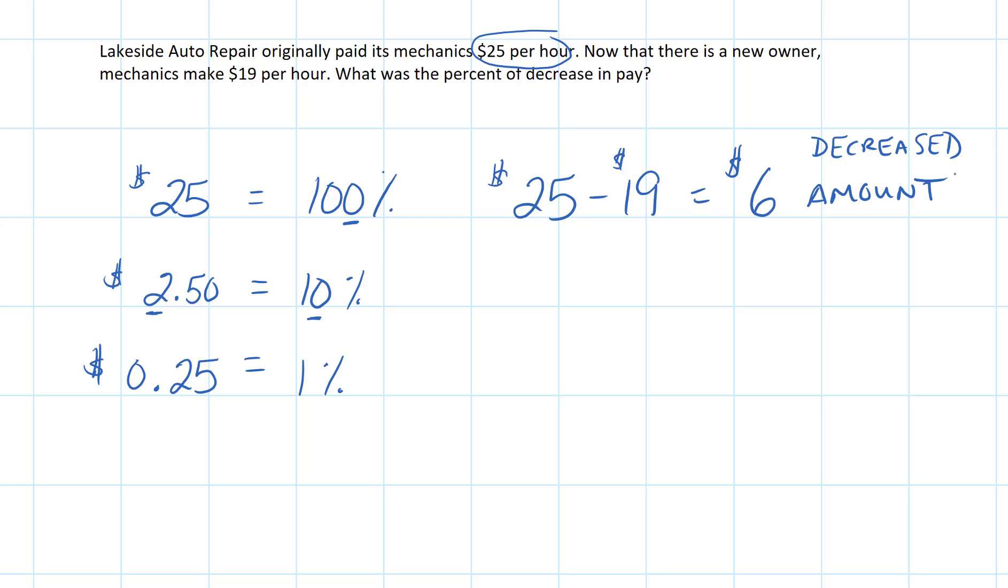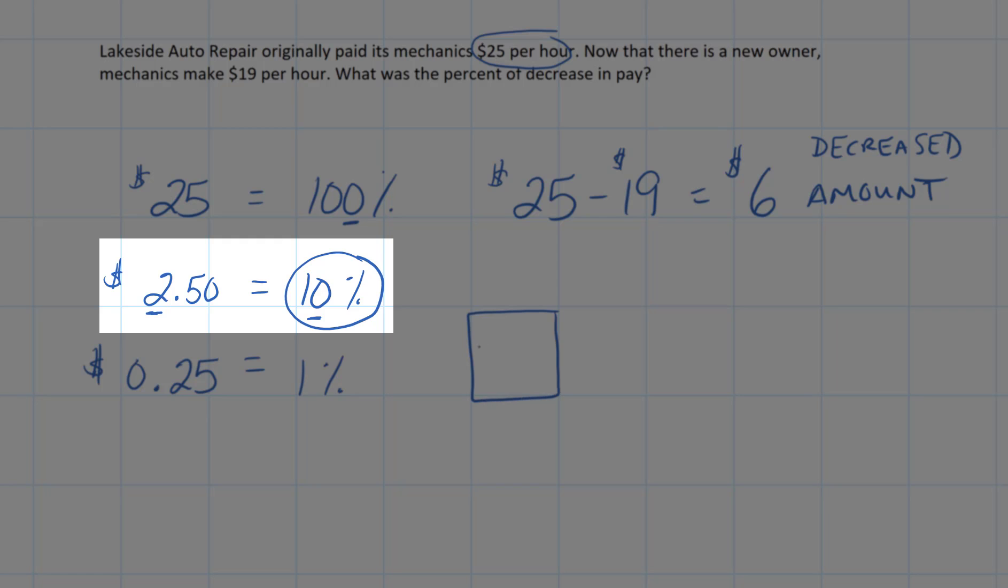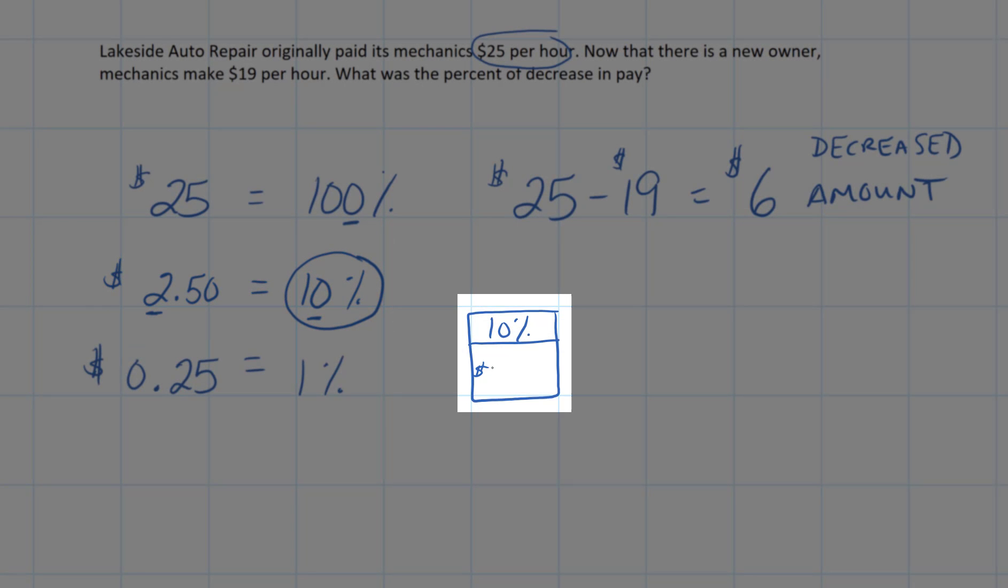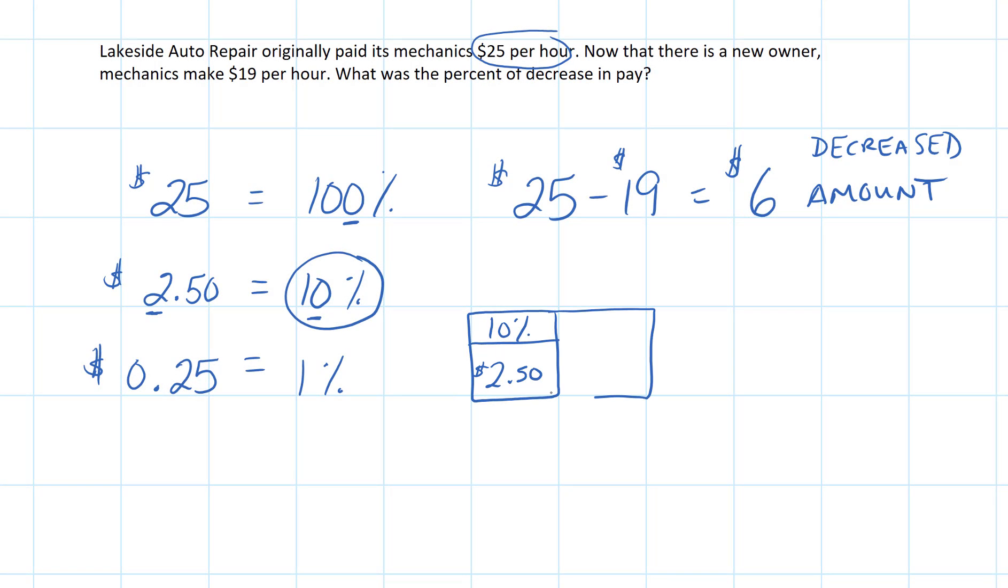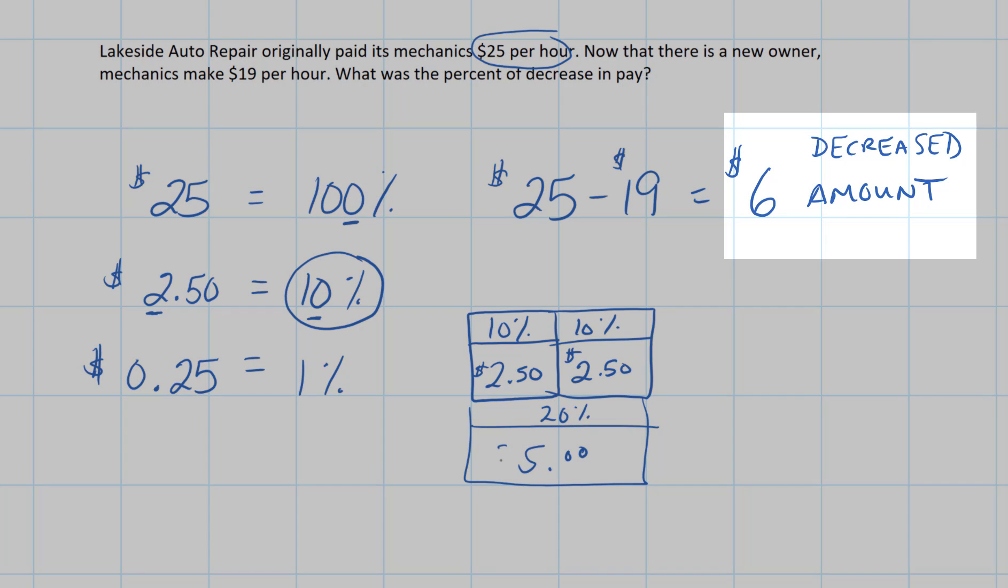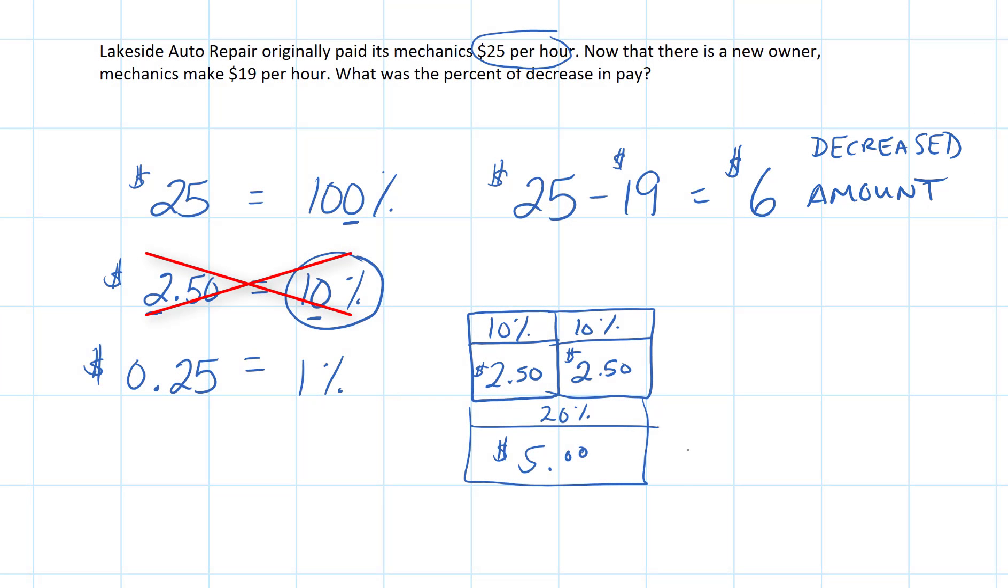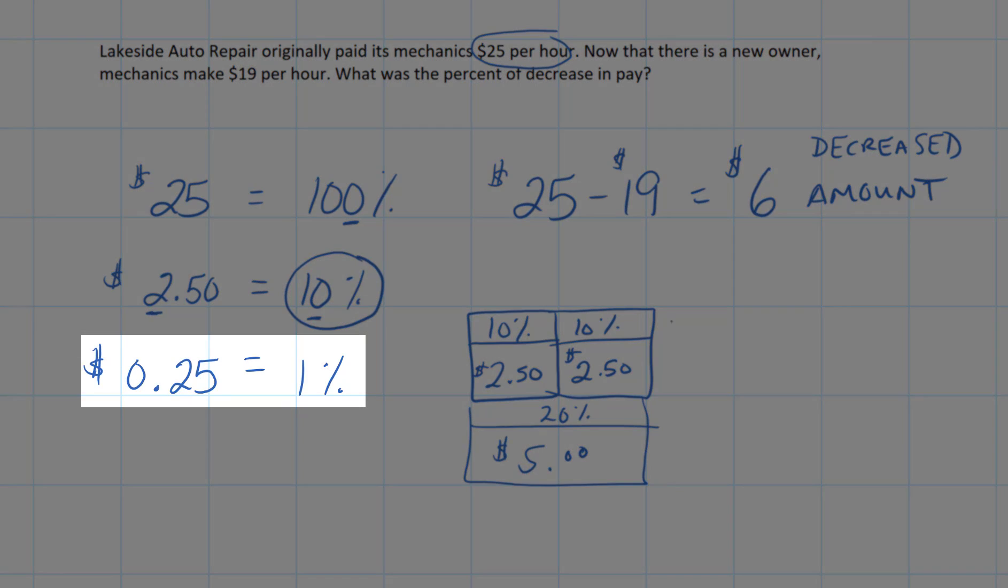We need to find the percentage that goes along with this decreased amount. So I can start by building $6 out of 10% blocks. So a 10% block is going to give me $2.50. And I can keep going. Another 10% block is another $2.50. And now I realize that I'm up to 20% and $2.50 and $2.50 is going to give me $5.00. So I'm getting close to $6.00. But I can't use another $2.50 or another 10% block because that would put me over $6.00. That would be at $7.50. That wouldn't work. So now we've got to use 1%.